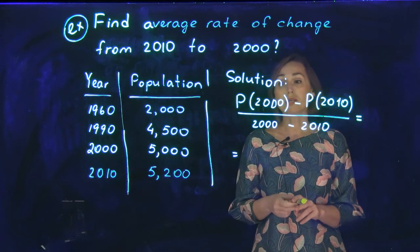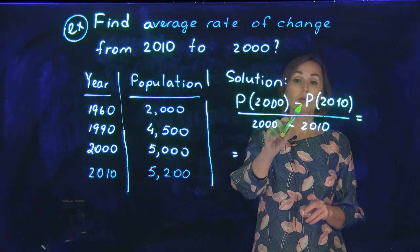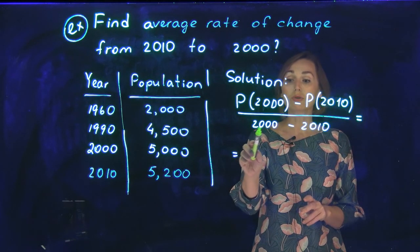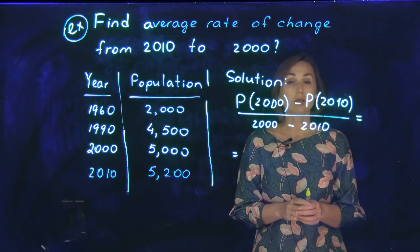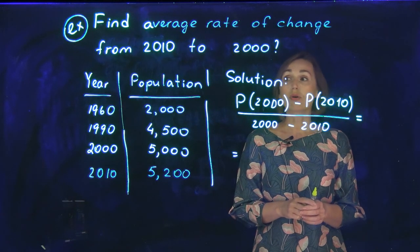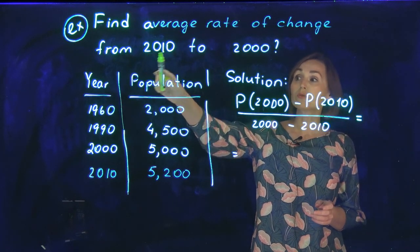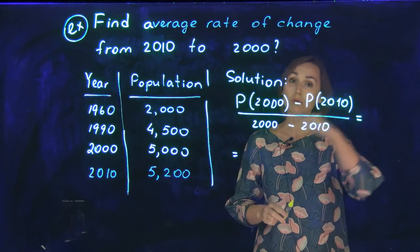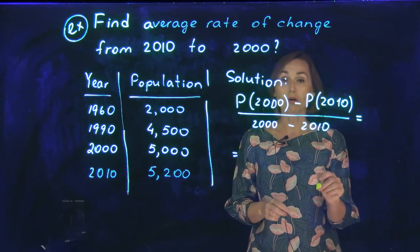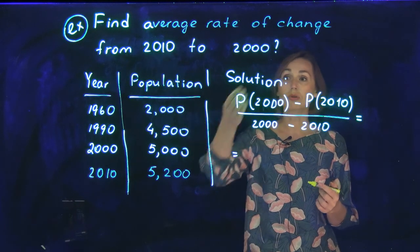The formula says it is going to be population in 2000 minus population in 2010, over 2000 minus 2010. There is no mistaking here — you can go backward. You are asked about from 2010 to 2000, so you go backward, and it is okay to go backward. Just use the formula correctly: this is your starting point and you finish here.